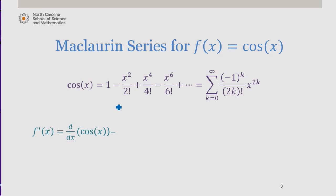we find that the derivative of the first term in this sum is 0 minus 2x over 2 factorial plus 4x cubed over 4 factorial minus 6x to the fifth over 6 factorial and so on.